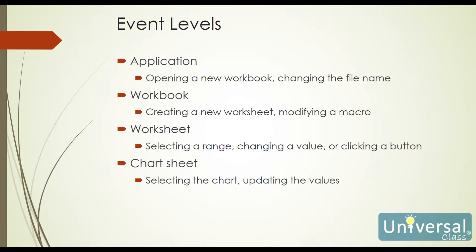Within Excel and VBA, there are different levels at which that listener can happen. Events can occur at the application level, such as opening a new workbook or changing the file name. At the workbook level, like if you want to add a new worksheet or modify a macro. At the worksheet level, if we select a range, change a value, click a button, and so forth. And then at the chart level, we can also do things like if you select the chart or update the values — those are all different types of events.